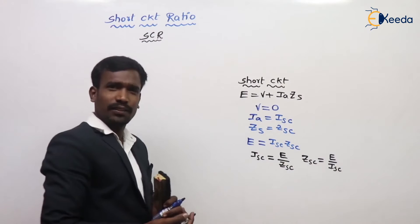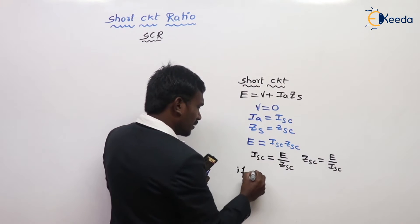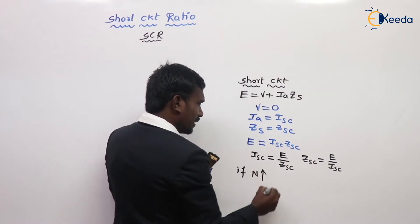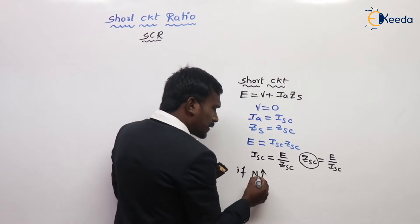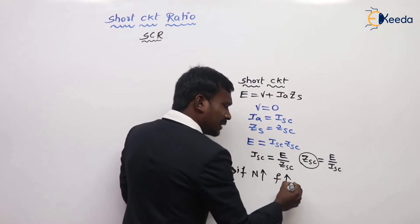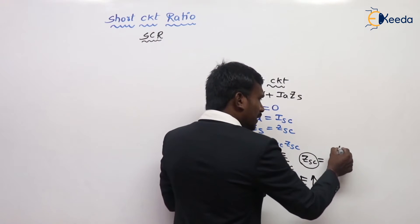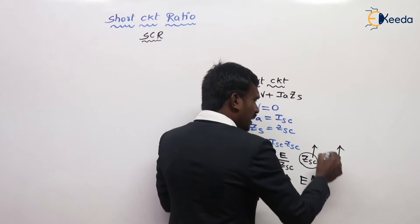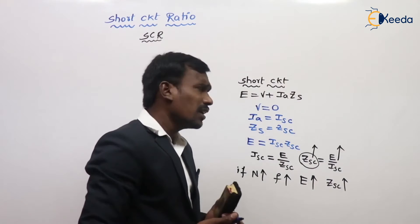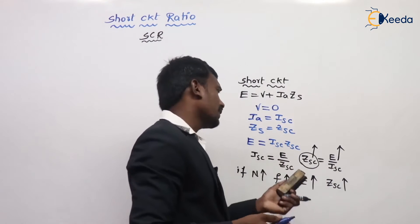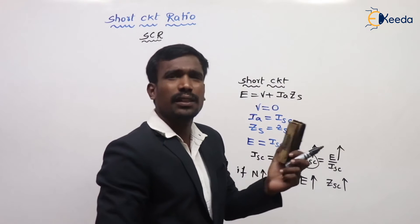Now, they will ask you a question: if speed increases, what happens to ZSC? If speed increases, nothing but frequency increases. If frequency increases, EMF increases. If EMF increases, ultimately ZSC — short-circuit impedance — also increases. So ZSC is directly proportional to EMF and directly proportional to frequency. Generally, if frequency increases, impedance increases.